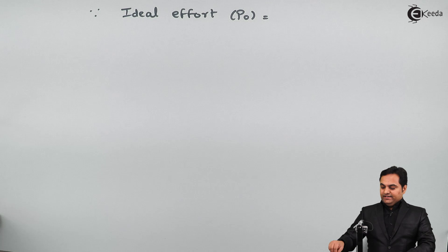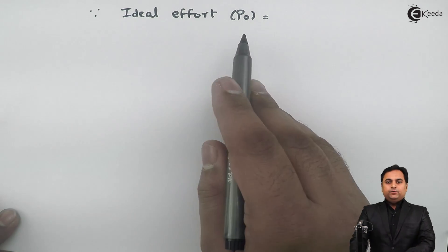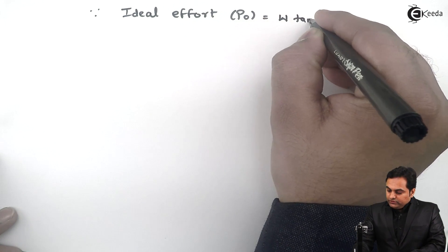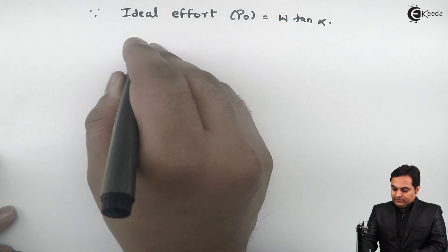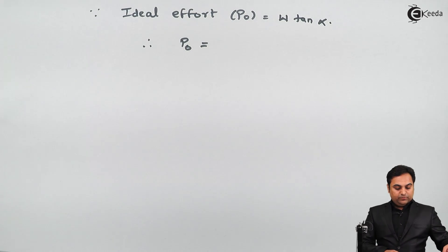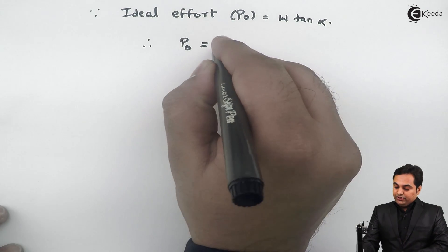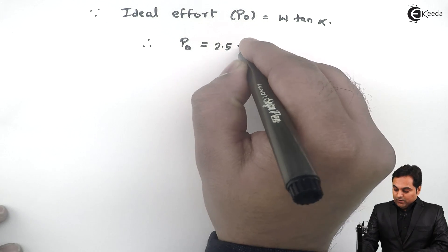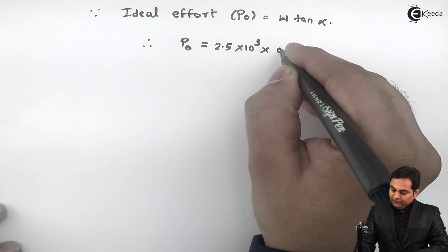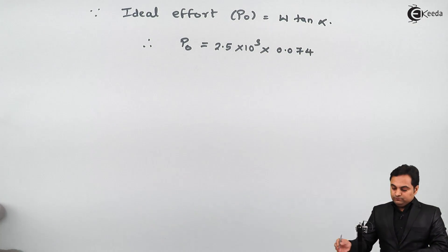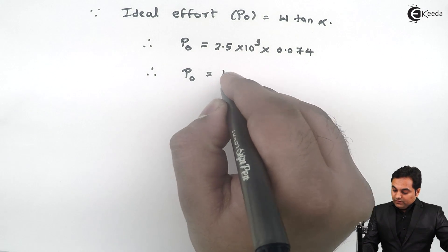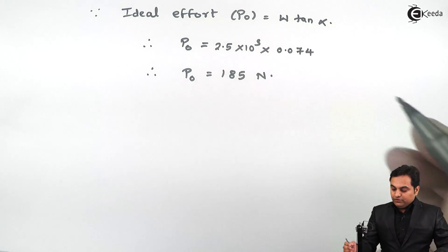The ideal effort P0 is given by the formula: P0 = W × tan(alpha). Therefore, P0 = 2.5 × 10³ × 0.074, which gives the ideal effort P0 = 185 Newton.